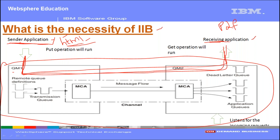The receiving application has received the HTML message, but the problem is that its business requirement is to generate and process only PDF related messages. So can the receiving application process that HTML message? Definitely not, because it is designed to understand and process only PDF related messages. Although MQ has successfully transported the message, it is of no use because message conversion—from one format to another—is not happening in MQ.